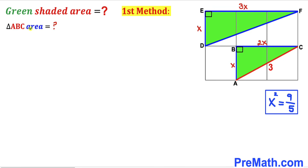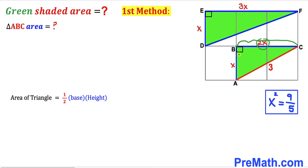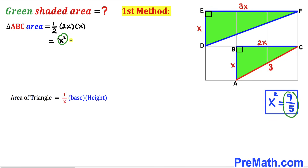Now let's calculate the area of triangle ABC. The area formula is one-half times base times height. The base of triangle ABC is 2x and the height is x, so the area equals one-half times 2x times x, which simplifies to x². Since x² equals 9/5, the area of triangle ABC turns out to be 9 divided by 5.